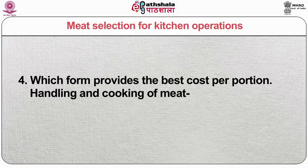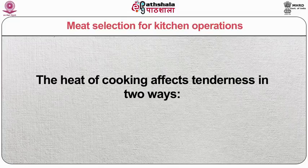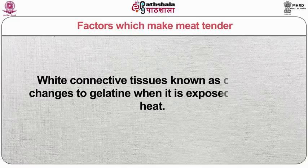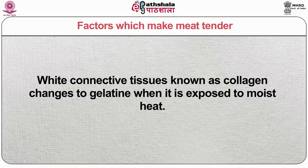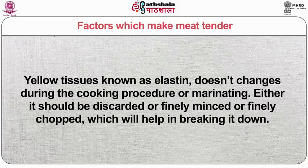Handling and cooking of meat — tenderness and right cooking methods: the heat of cooking affects tenderness in two ways. It tenderizes connective tissues if moisture is present and cooking is slow. It also toughens protein — even meats low in connective tissues can be tough and dry if cooked at excessively high heats for too long. Factors which make meat tender: moist heat — white connective tissues known as collagen change to gelatin when exposed to moist heat. Yellow tissues known as elastin don't change during cooking or marination; either they should be discarded or finely minced or chopped to help break them down.